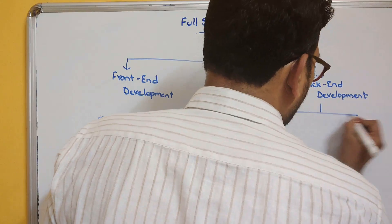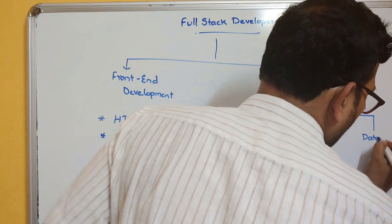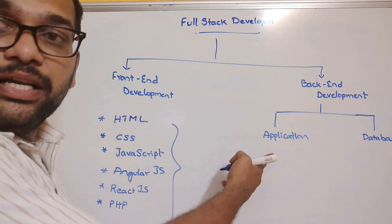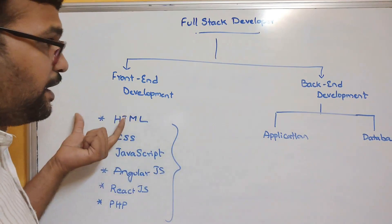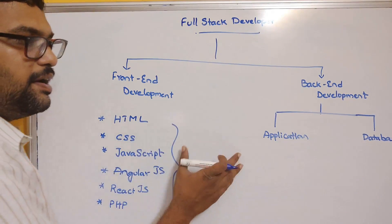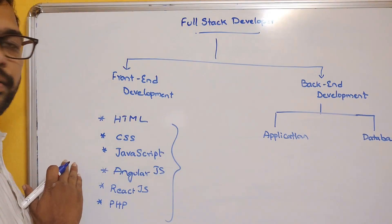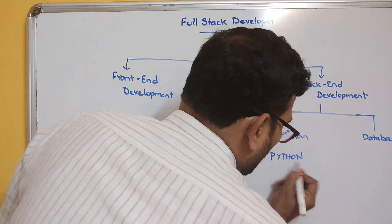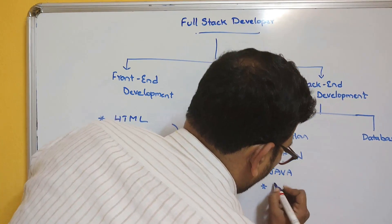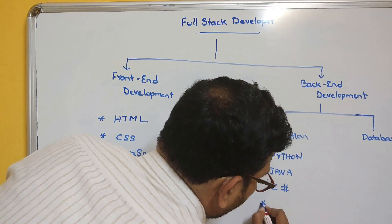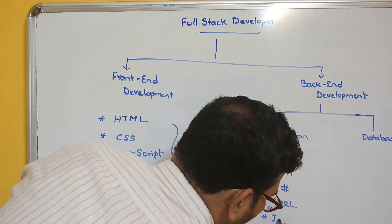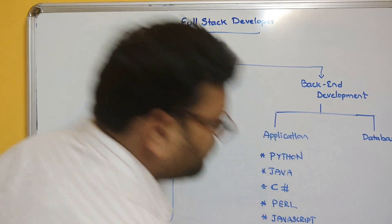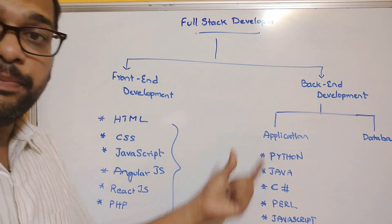Coming to back-end development, you need a database and an application. The application acts as a bridge between the front-end and the database — it gets the request from the front-end, processes it against the database, and gives the response back to the front-end. For the application layer, you need to learn technologies such as Python, Java, C-Sharp, Perl, and sometimes JavaScript or PHP, which can also be used for back-end development.